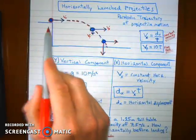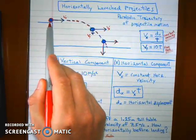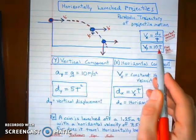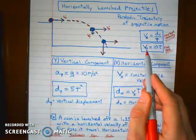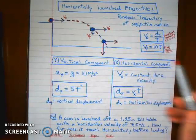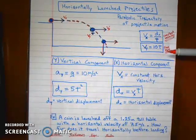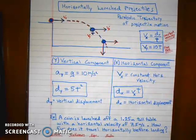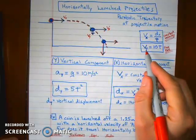So the velocity initially in the y direction is zero. It's not falling initially at time zero. But one second later, it'll speed up to 10 meters per second. Two seconds later, 20 meters per second. Three seconds later, 30 meters per second. Because it's increasing its velocity by 10 meters per second each second due to gravity. That's the acceleration in the y direction only.